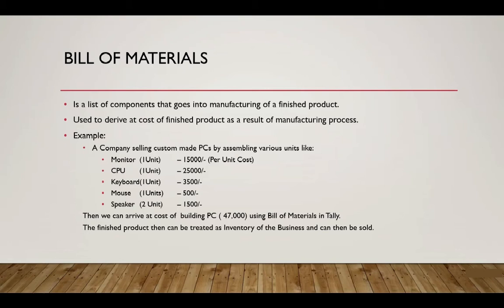On screen we have an example of what a Bill of Material looks like. This Bill of Material contains a list of items that go into making a PC, and it states that a PC is made up of one unit of monitor, CPU, keyboard, a mouse, and two units of speakers. The rate of each unit is also present, and based on this information we can arrive at the cost of building a PC, which would be 47,000 rupees.